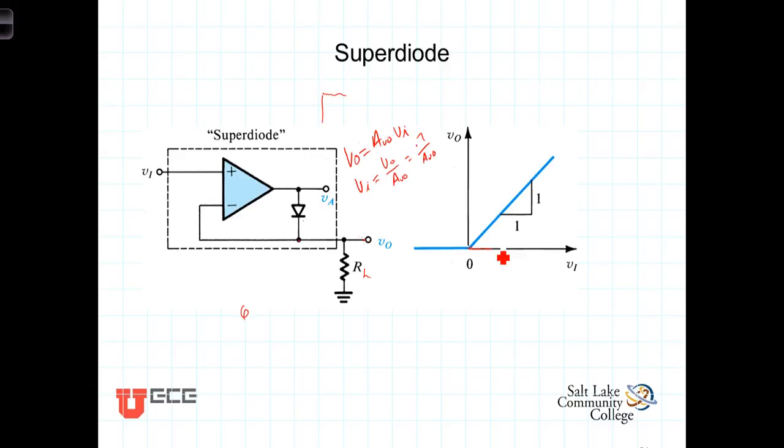And there is no delay. We don't see that seven-tenths of a volt wait on the input before the diode starts to conduct. And that, again, is because of the open loop gain of the amplifier driving the output well beyond the seven-tenths of a volt, almost right at t equals zero, or just very shortly after the transition on the input.